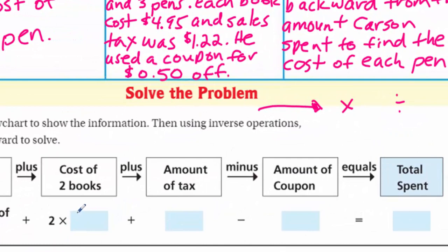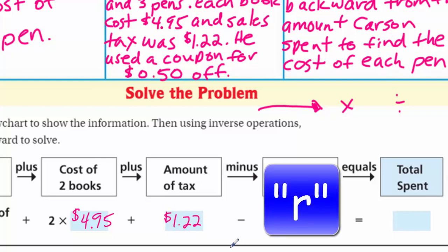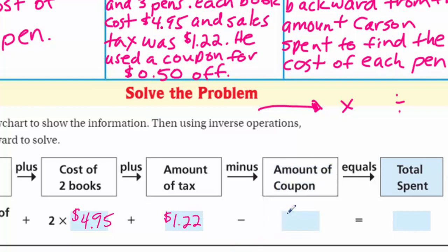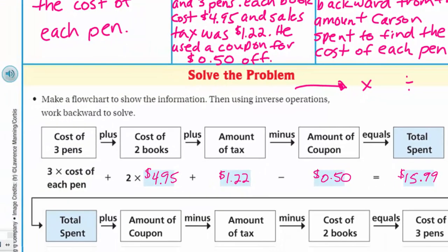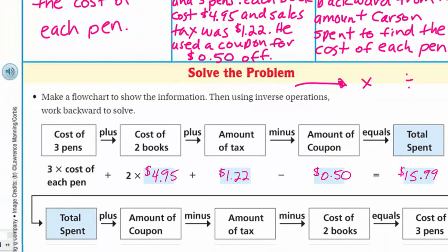Now, how will I use the information? Well, this is our learning target. What we can do in this particular problem is work backward from the amount Carson actually spent to find the cost of each pen. Let's write that down. I can work backward from the amount Carson spent to find the cost of each pen. This is pretty cool.